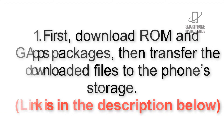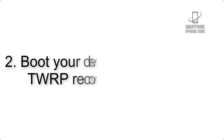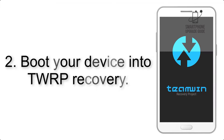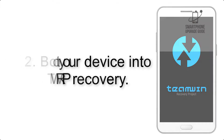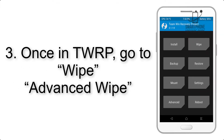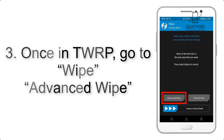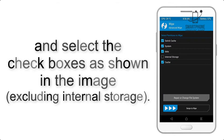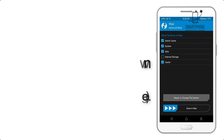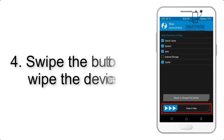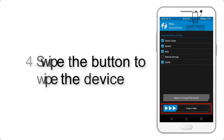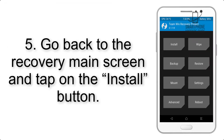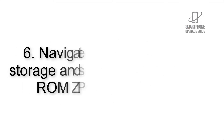Step 2: Boot your device into TWRP recovery. Once in TWRP, click on Wipe, then Advanced Wipe, and select the checkboxes as shown in the image, excluding internal storage. Step 4: Swipe the button to wipe the device.